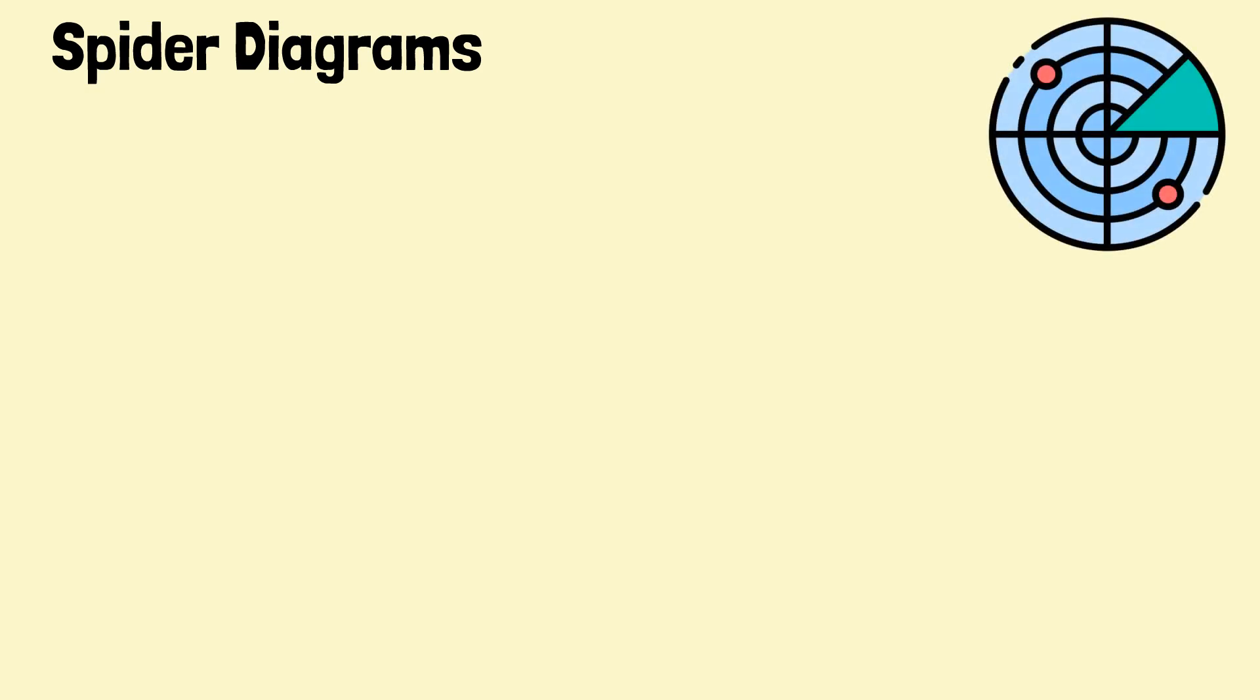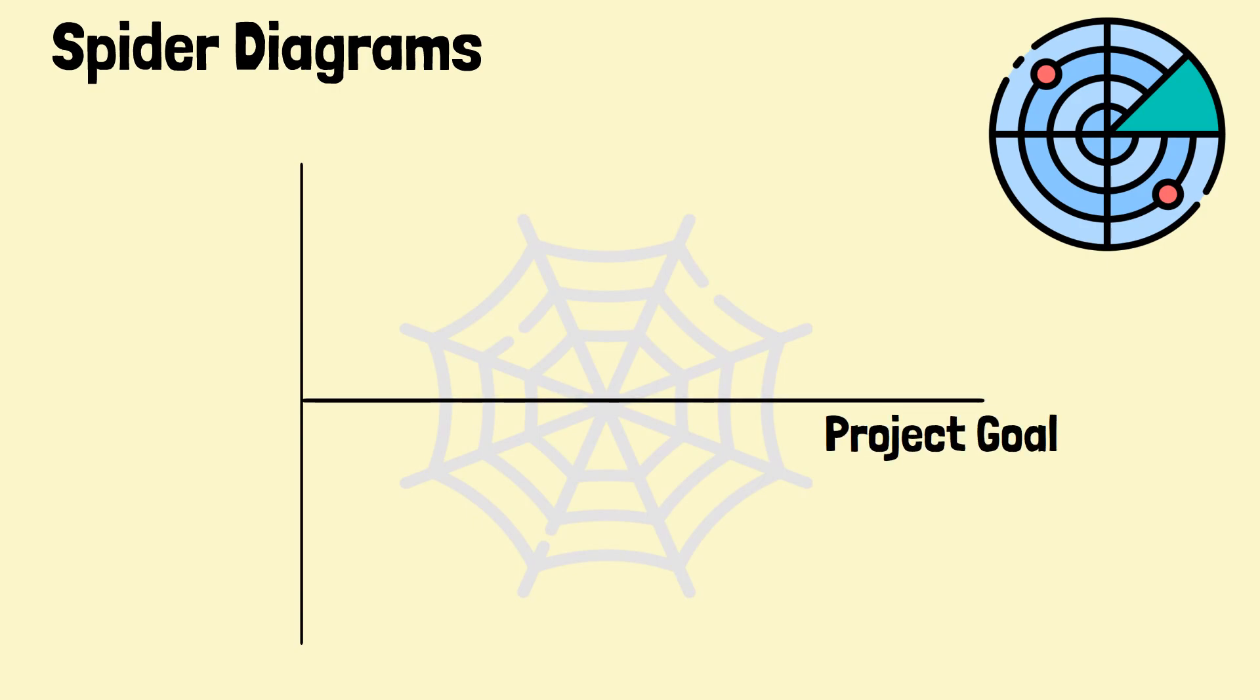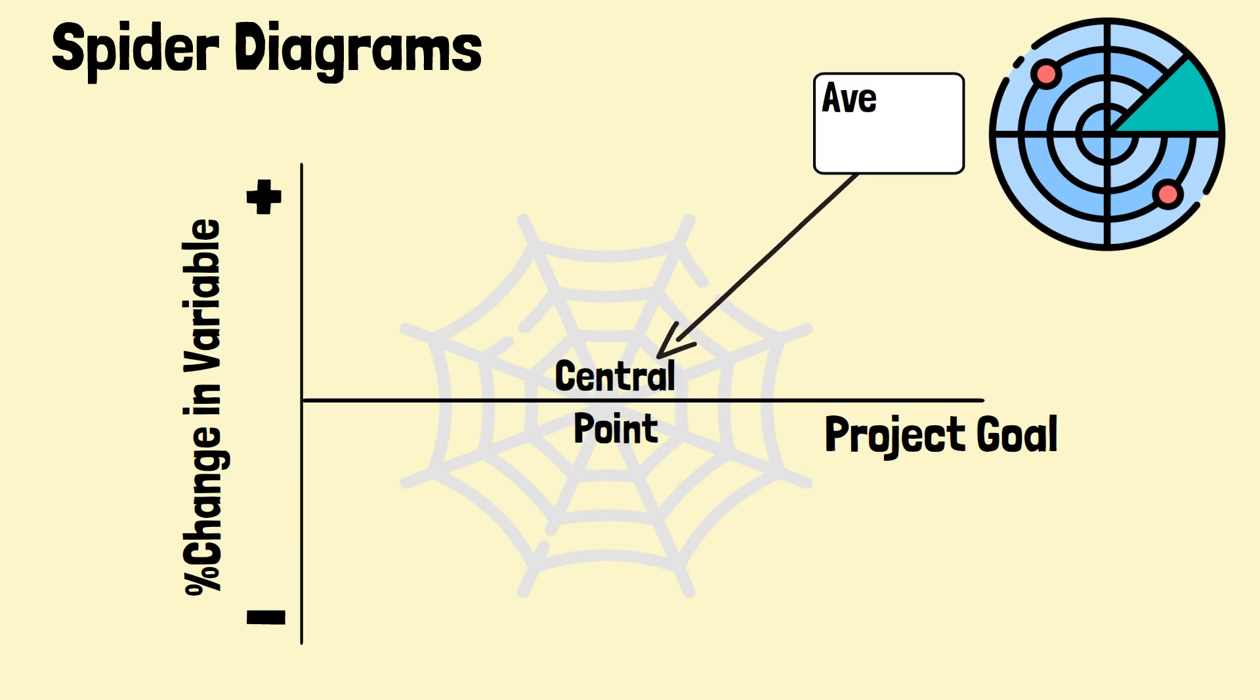What is a SPIDER diagram? A SPIDER diagram, also known as a radar chart or web chart, is a visual tool used to display the relative values of multiple variables in a single graph. The SPIDER diagram consists of a central point, which represents the average value of all the variables, and several lines extending from the central point, each representing a different variable.